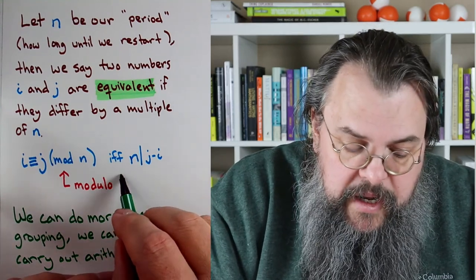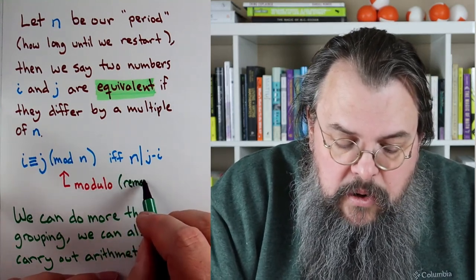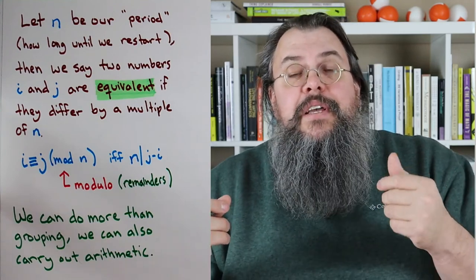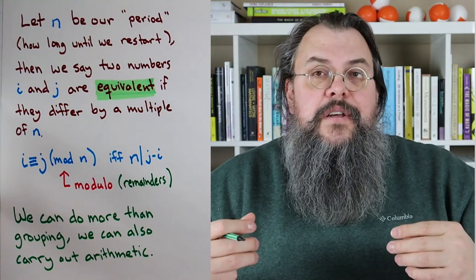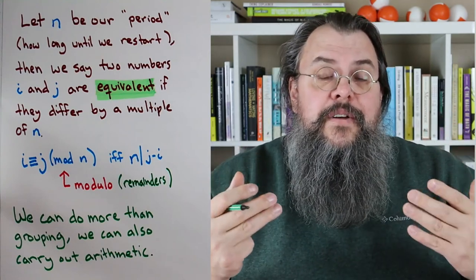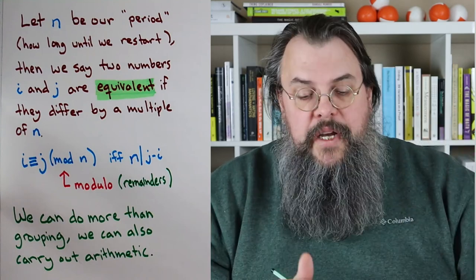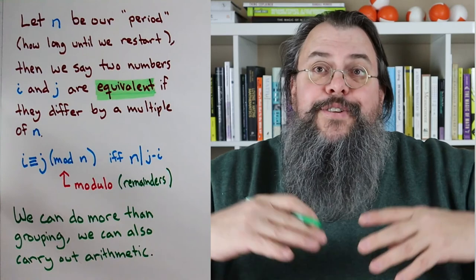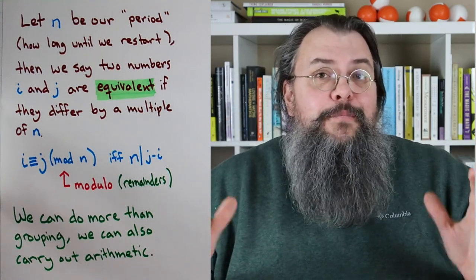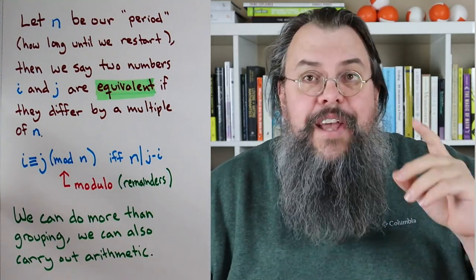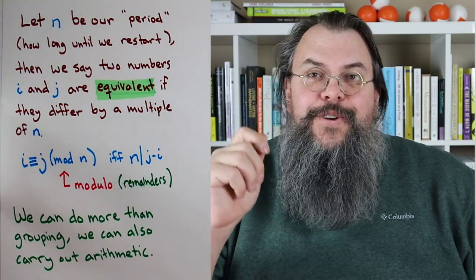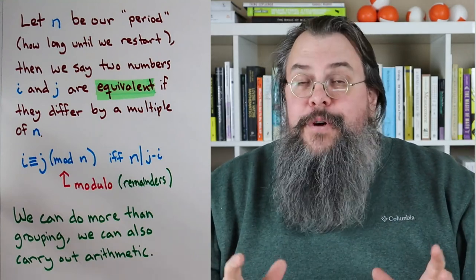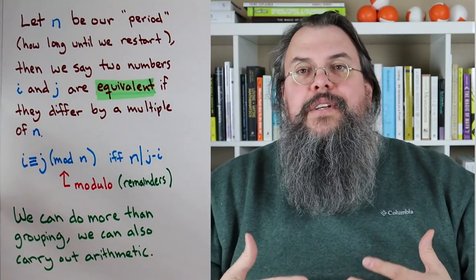Another way to think about modular arithmetic is in terms of remainders. What happens if we divide by n? There's going to be some remainder — it might be 0, 1, 2, and so forth. Two numbers are equivalent if and only if they have the same remainder when you divide by n. Now, we've talked about grouping things together. That's all fine and well, but can we do more? And the good news is yes — not only can we group, we can also do arithmetic.